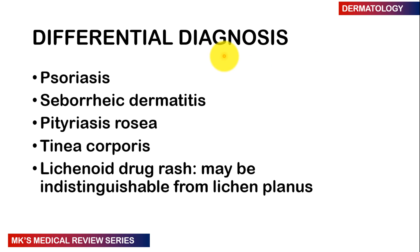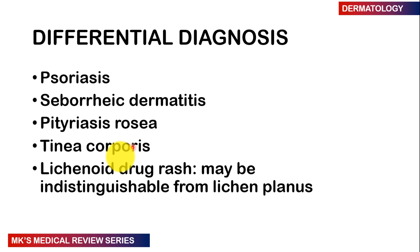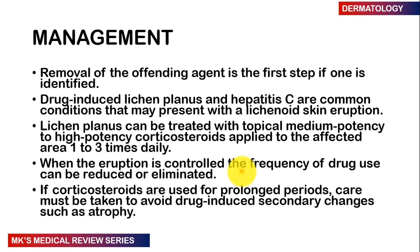A differential diagnosis for lichen planus includes psoriasis, seborrheic dermatitis, pityriasis rosea, tinea corporis, and lichenoid drug reactions, which may actually be indistinguishable from lichen planus.